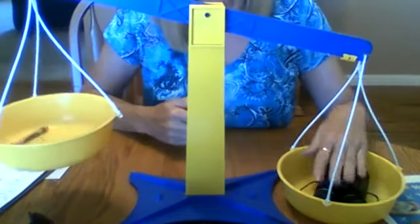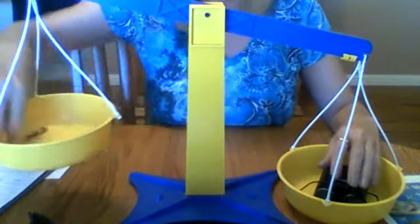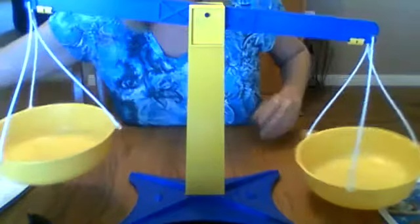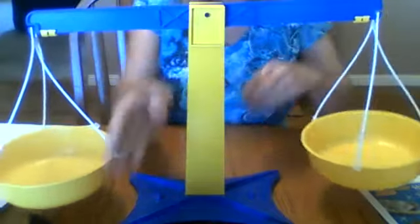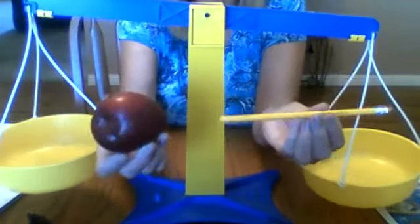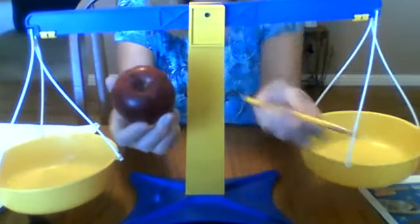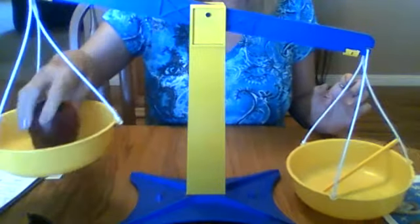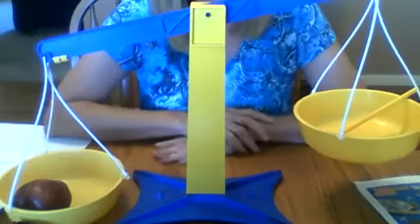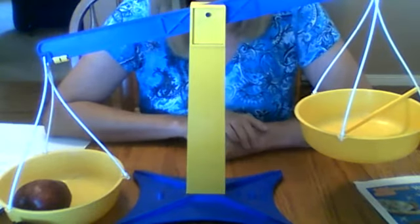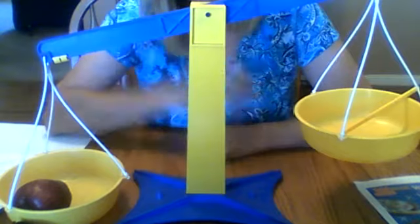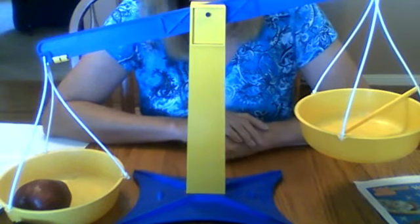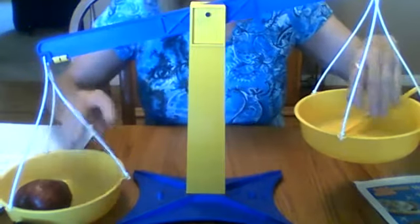It is heavier than the crayon. Let's try something else. Let's compare an apple and a pencil. We put the pencil on one side and the apple on the other. So which side is heavier? Which one weighs more? The apple. The pencil is lighter than the apple. The apple is heavier than the pencil. Kind of fun.